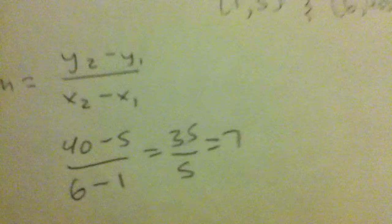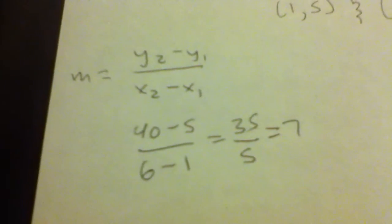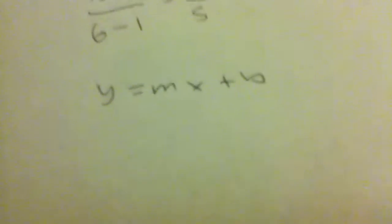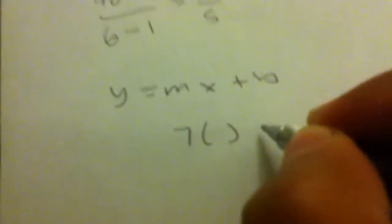Now that we have the slope, we have to find the y-intercept using slope-intercept form. So we have m, which is 7, but we don't have b.